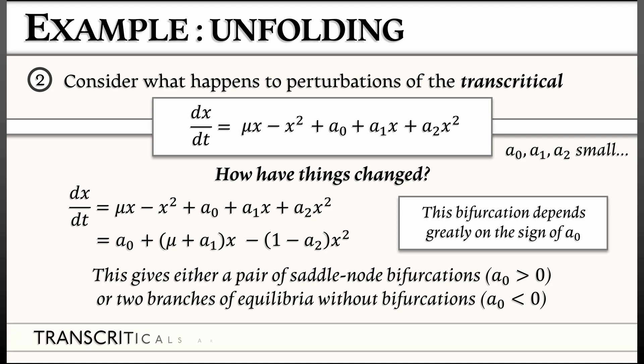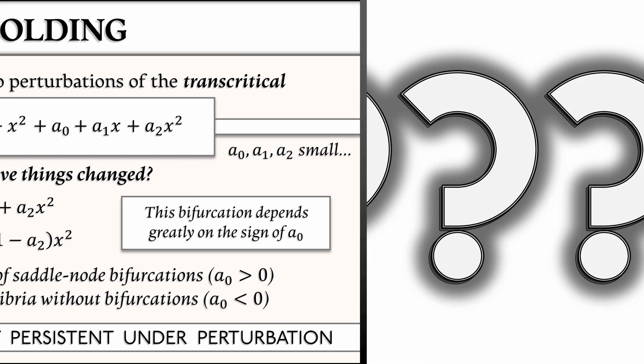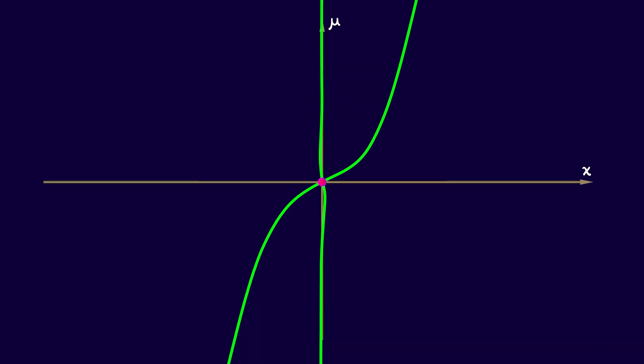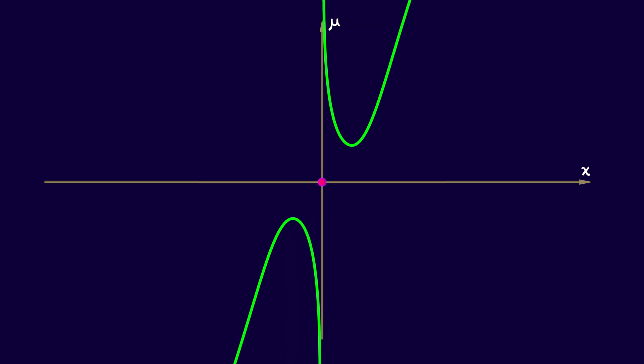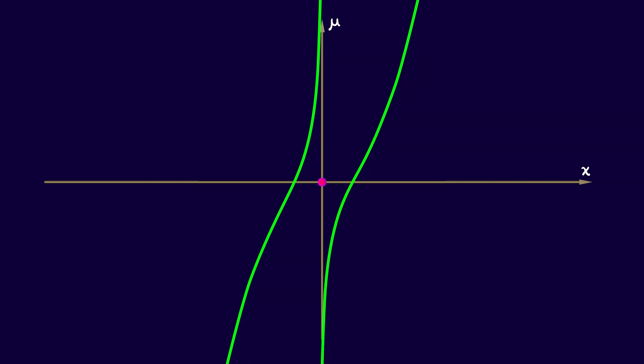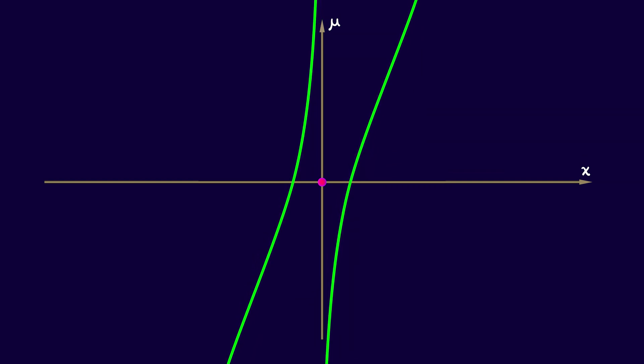Transcriticals, unlike saddle nodes, are not persistent under perturbation. They're not robust. And if we want to know what this looks like, well, we can plot things in the μ-x plane. And we can look at what happens when a₀ is zero. We get a transcritical. When a₀ is positive, it breaks a certain way and we get, aha, we get this pair of saddle nodes. Whereas if we turn the dial the other way and we say, oh, if a₀ is negative, then what do we have? Ah, these two branches split. One to the left, one to the right. You see how the stabilities match up.